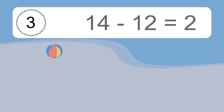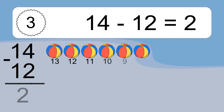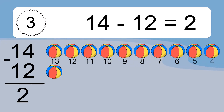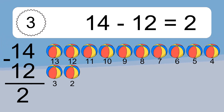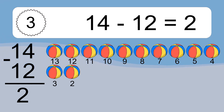14 minus 12 equals what? 14 minus 12 equals 2. Let's count it! 13, 12, 11, 10, 9, 8, 7, 6, 5, 4, 3, 2.